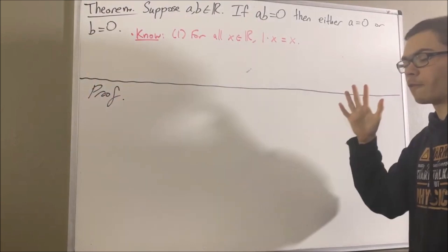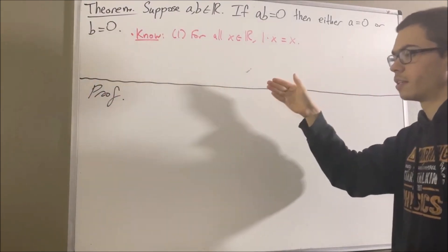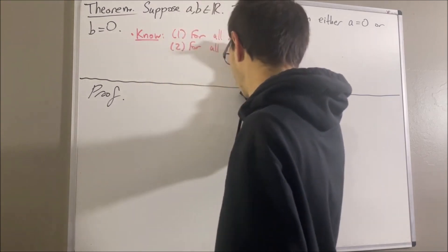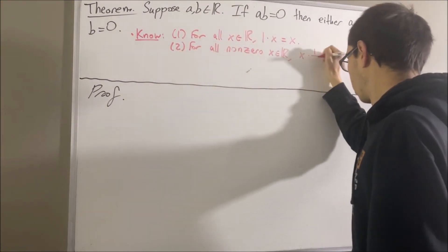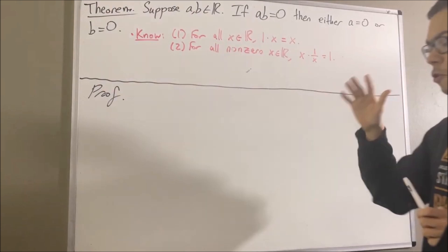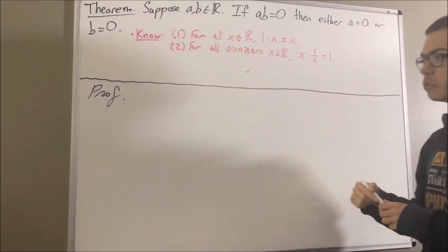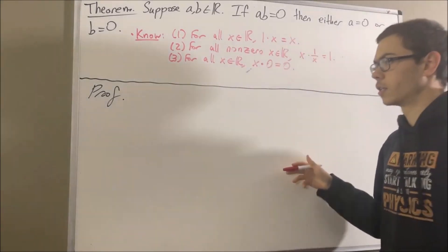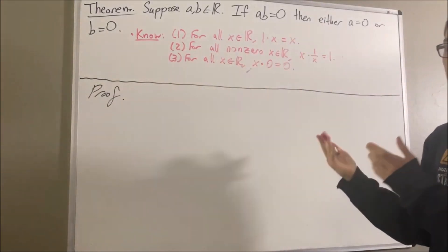The second is, for every non-zero real number x, x times 1 over x is equal to 1. The third is, for every real number x, x times 0 is equal to 0. And the fourth is just the commutative and associative laws.